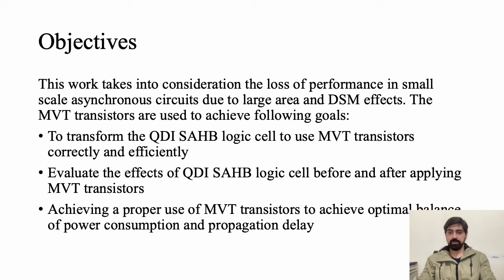The objectives of this work focus on transforming the sense amplifier half buffer (SAHB) design approach of QDI-class asynchronous circuits by using multi-voltage threshold transistors correctly and efficiently. This work observes the effects of using MVT in comparison to non-MVT-based design, and takes a quick look at achieving the optimal balance of voltage threshold transistors for a fair trade-off between power consumption and propagation delay.